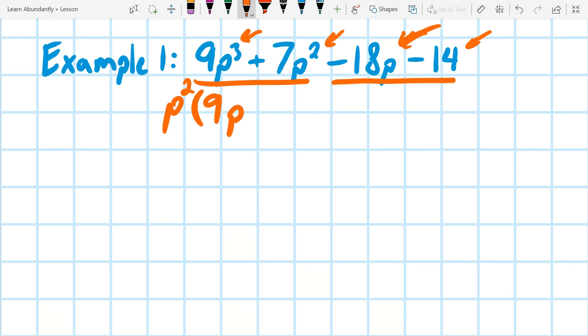And then when I look at the second term, I can't take a p out of both of them, but do you notice that they're both negative? So I can definitely take out a negative, but what's the biggest negative? A two, and that would leave me with 9p plus 7.